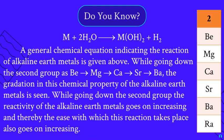While going down the second group, the reactivity of alkaline earth metals goes on increasing, and thereby the ease with which this reaction takes place also goes on increasing as we move from top to bottom in this group.